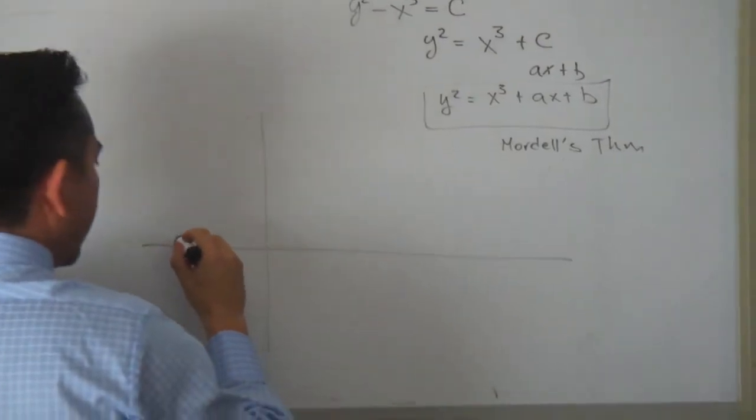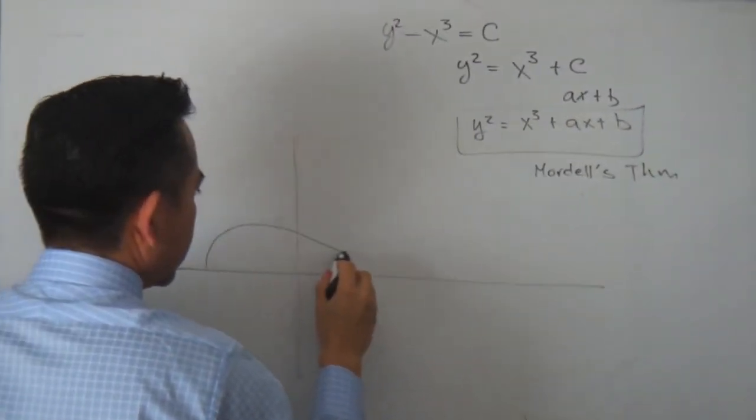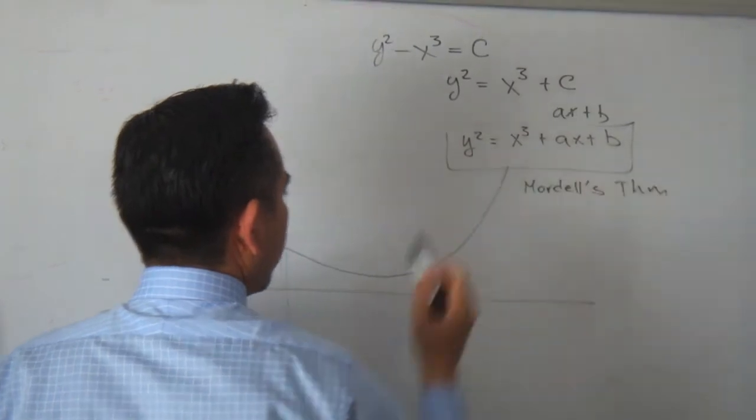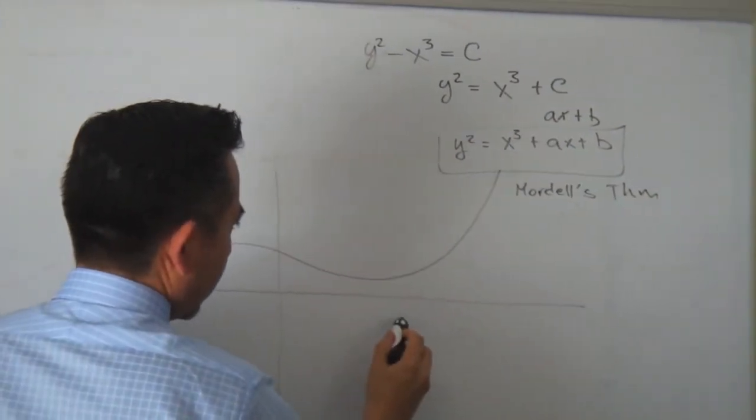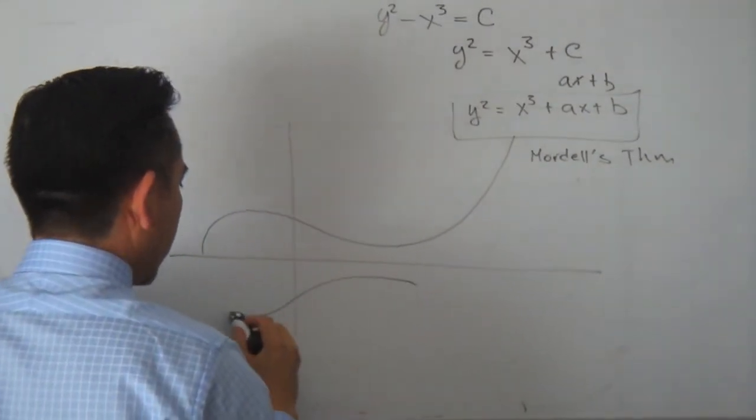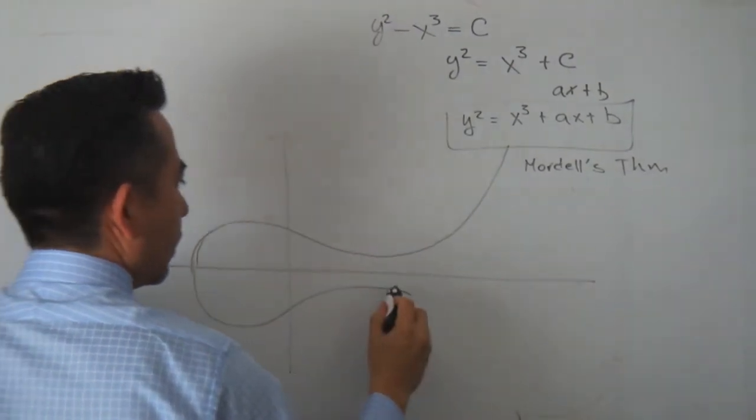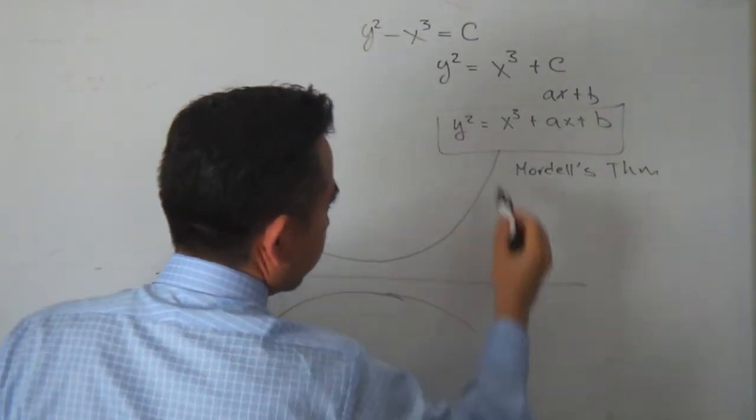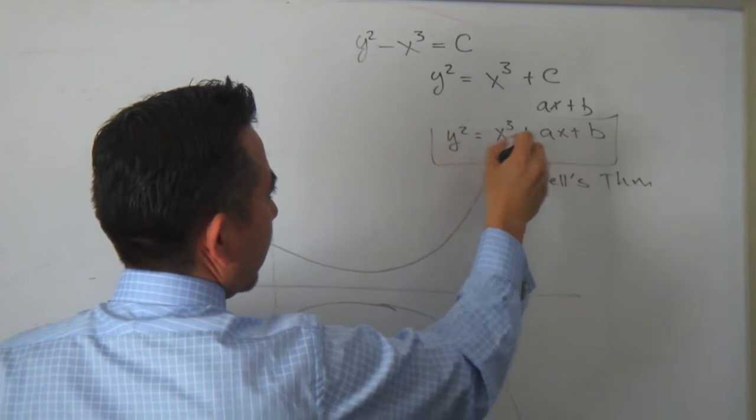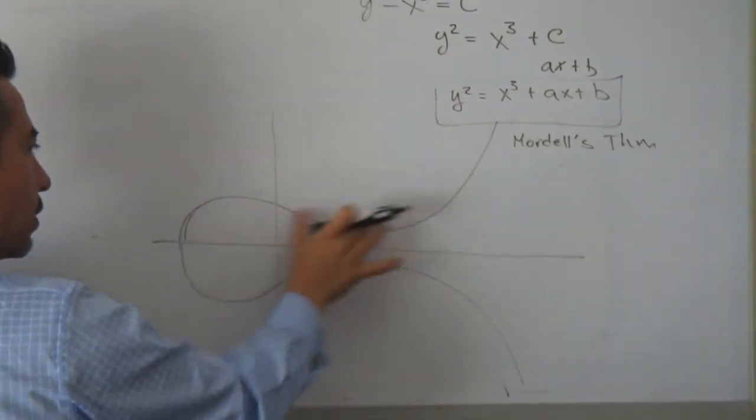So I have something like this, which is the difference between a cubic and a square function. Now, I have the negative part, because it's this one, so this is the plus and minus square root. This is my negative part, this is my positive part.